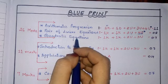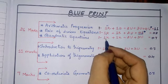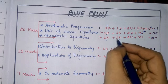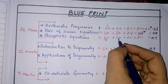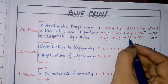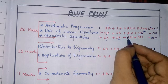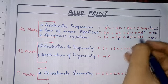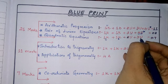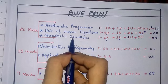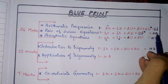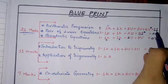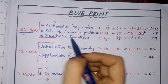For Quadratic Equations: 1 MCQ (knowledge), 1 one-mark knowledge question, 1 two-mark understanding question — mostly either the formula method or discussing the nature of roots — and 1 three-mark understanding question. Total 7 marks. So Theme 1: AP 11 marks + Linear Equations 8 marks + Quadratic Equations 7 marks = 26 marks.